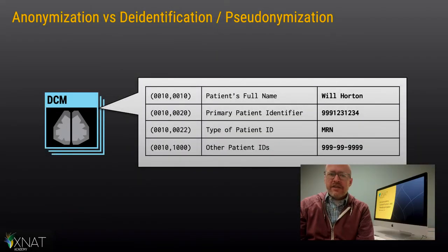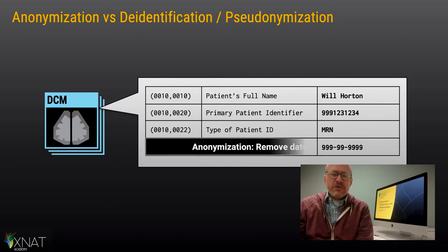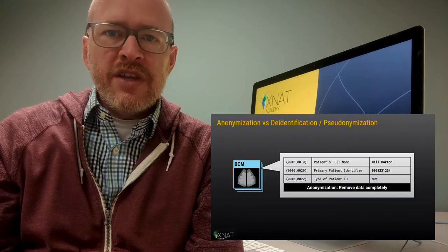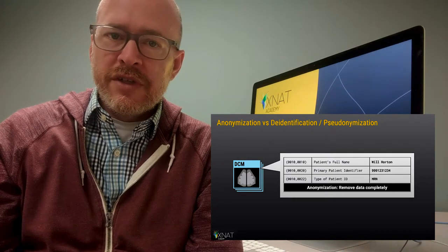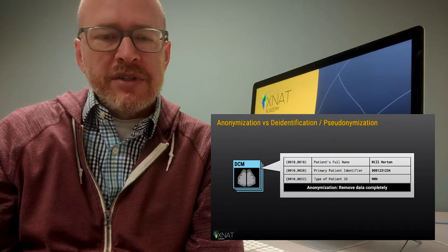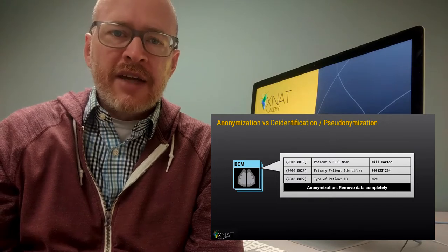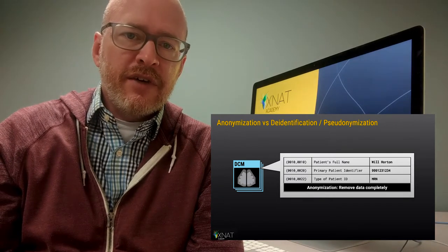In terms of techniques, let's talk briefly about the difference between anonymization, de-identification, and pseudonymization. Anonymization means to completely destroy the identifying data and its link back to the subject. For example, if you have a social security number embedded into DICOM metadata, you would want to remove it completely. Or, in public data reporting of patients with similar tumors, reporting on them in the aggregate rather than individually removes any possibility of identifying individuals in the study.